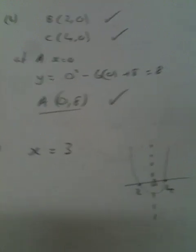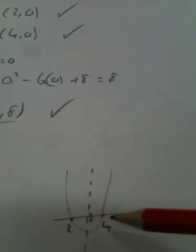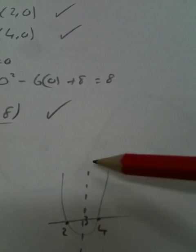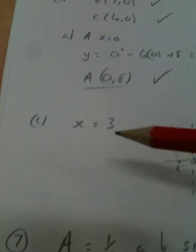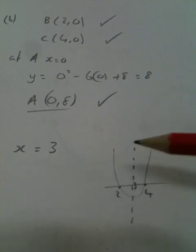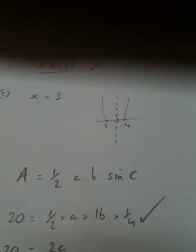On to number 7. Oh, hang on. I missed out part C. What is the equation of the axis of symmetry of this graph? So, we know it crosses at 2. We know it crosses at 4. There's a line of symmetry down the middle. So, that line of symmetry is going to go through x equals 3. In fact, anywhere on this dotted line, the x-coordinate will be 3. So, the line of symmetry is x equals 3 because anywhere on the line, the x-coordinate is 3 anywhere on that line.